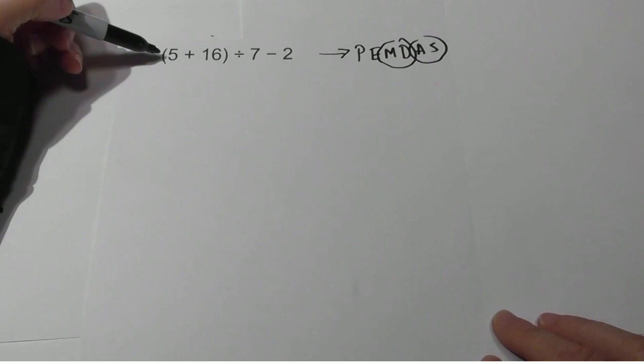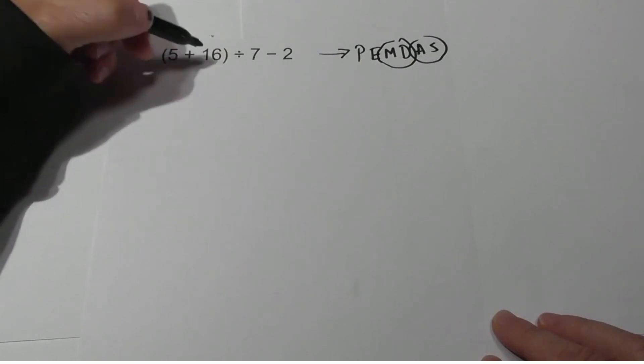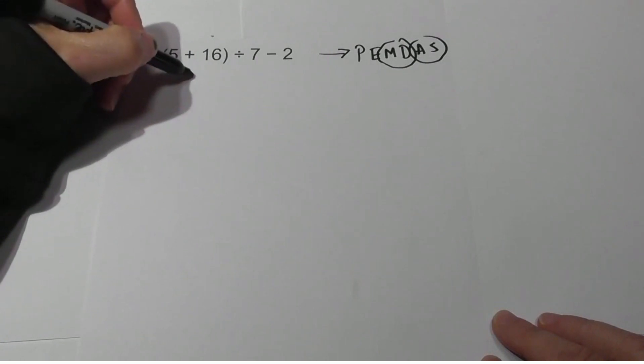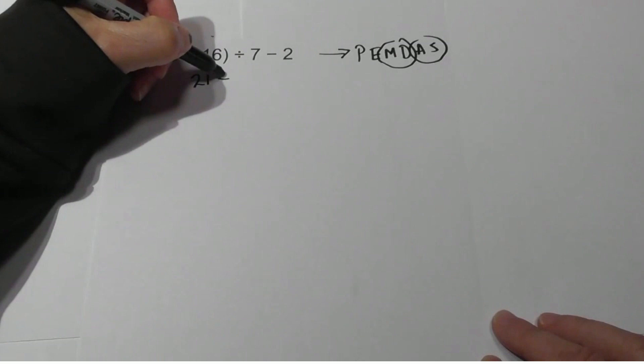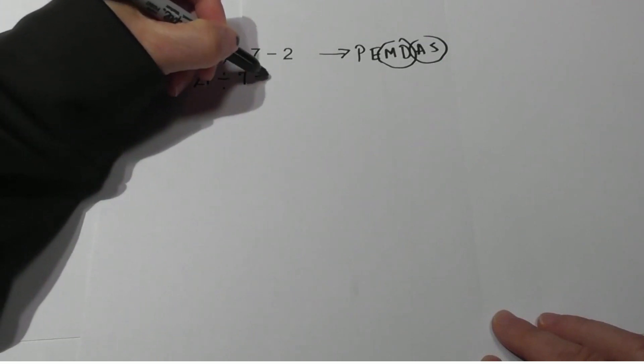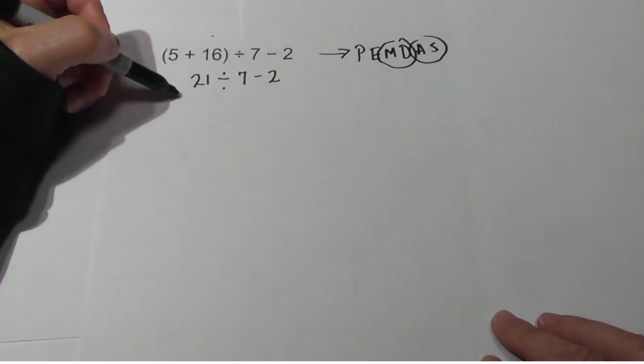Let's begin. Do we have parentheses? Working from left to right, yes we do. We have 5 plus 16. 5 plus 16 is 21. Now I will bring everything else down. Now we are starting over again, working left to right.